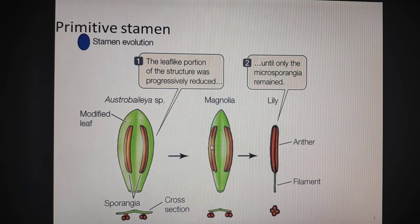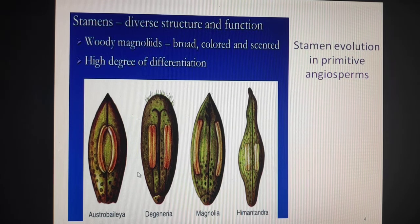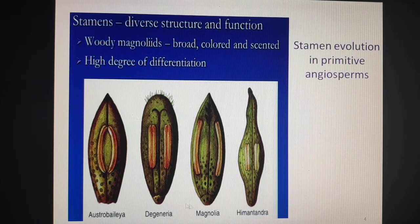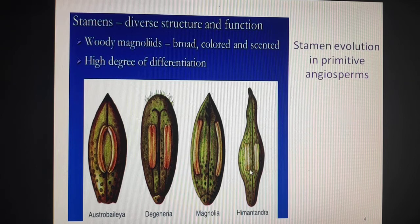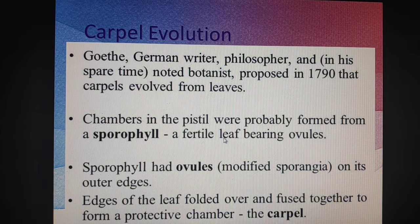So there is a gradual transition and an evolutionary trend of stamen evolution. In Austrobaileya species, Degeneria species, Magnolia, and Himantandra species, you can see the gradual reduction of the flattened part. The microsporangia, which are the pollen sacs, are retained, along with a little bit of the connective and the lower part which is transformed into the filament. So we can see a high degree of differentiation between the primitive species and the advanced angiosperm.